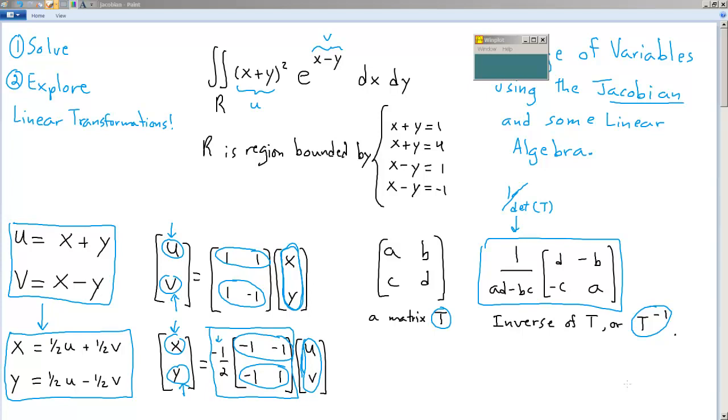In the previous video, we solved this double integral using a Jacobian, which is basically a multivariable change of variables. I'd like to show you what this mapping from one space to another actually looks like using this fantastic free program for Windows called WinPlot.